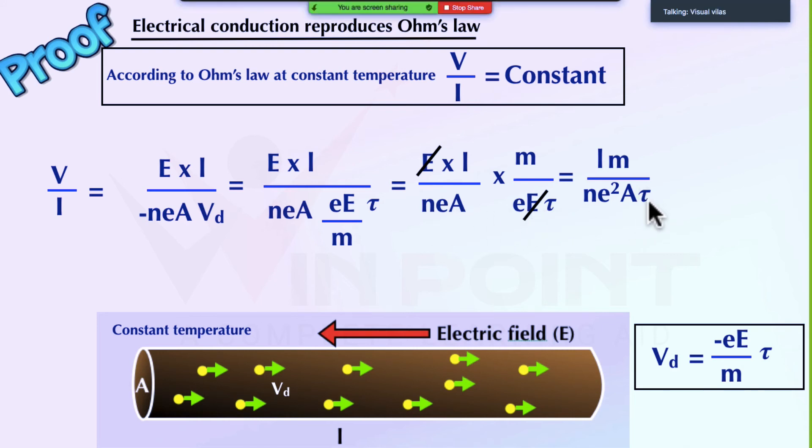Now, we are going to analyze each and every term. What is L? Length of the conductor. Is it a constant? It is a constant because we are not changing the length. Don't think like if we are increasing the temperature, there will be change in length. Here, I have written constant temperature. So L is a constant. And what is M? Mass of electron. Mass of electron is constant. What is N? Number density. Number density is constant. Number of electron per unit volume. Number density is constant.